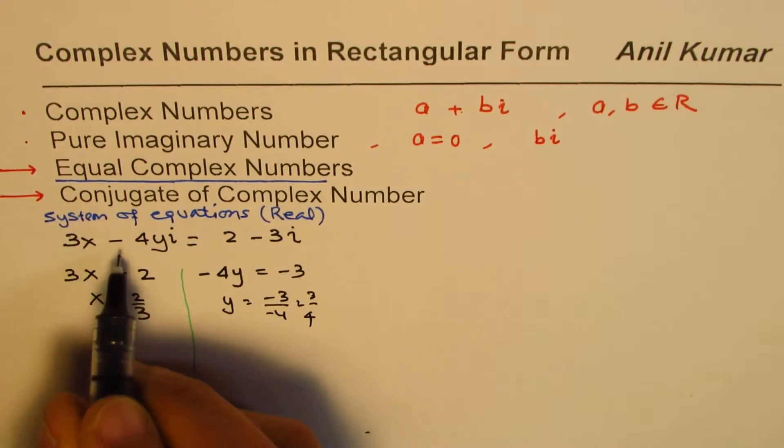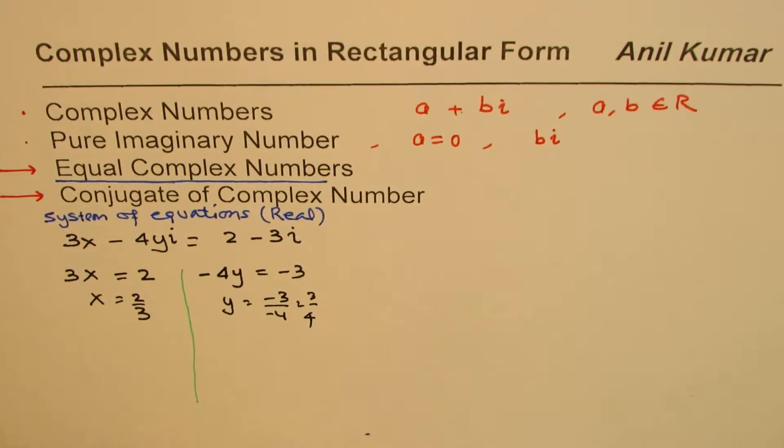For these equations to be true, x should be equal to 2 over 3 and y should be equal to 3 over 4. So that is how you can actually compare the equations.